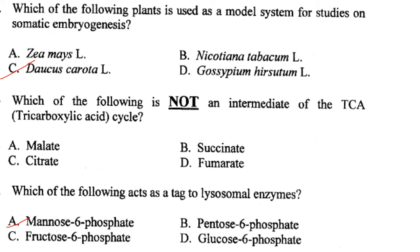Which of the following is not an intermediate of the TCA cycle? The options given are malate, citrate, succinate and fumarate. As per the instructor, all four are intermediates of the tricarboxylic acid cycle, so there may be a printing mistake in the question.